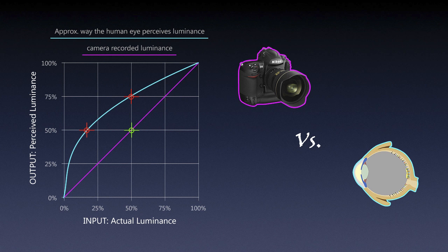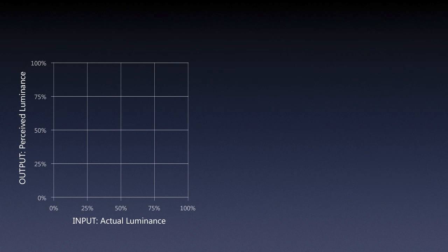That's the fundamental difference between how a camera captures digitally and how our eyes see in an analog fashion. Analog cameras with film actually more closely resembled the way our eyes see. This is more of a problem with digital capture, and in the upcoming slides I'll explain how we correct for it.